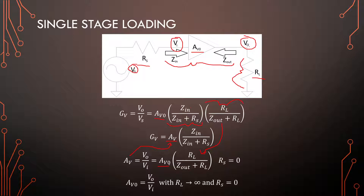Another way to get AV is just to set Rs to zero, and then the two Zin terms will cancel out. The maximum gain of our amplifier is when our load resistance is infinite and our source resistor is zero. So if our load moves towards infinite, RL will become much larger than Zout, and this term becomes 1. So AV0 is just the output over the input under those load conditions.